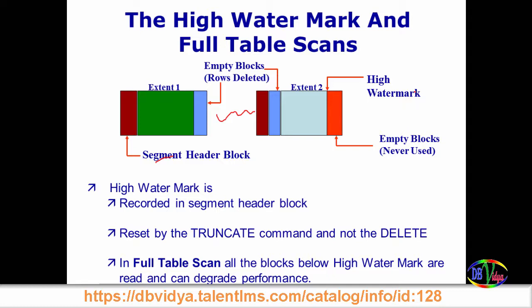So that is why it takes the same time as it took for a hundred thousand records. To fix this, we have to reset the high watermark pointer back to where the actual thousand records are. High watermark is recorded in the segment header block and is reset by the TRUNCATE command, not the DELETE command. But if you have a thousand records you still want to keep, you cannot use TRUNCATE, because it will delete all those records too.